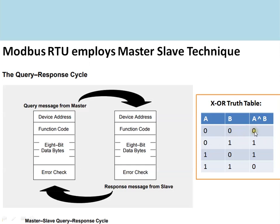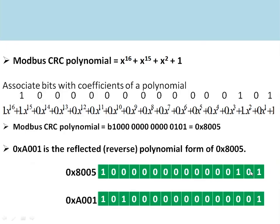In the XOR truth table: 0 XOR 0 = 0, 0 XOR 1 = 1, 1 XOR 0 = 1, 1 XOR 1 = 0. The Modbus CRC polynomial is x^16 + x^15 + x^2 + 1. The coefficients of this polynomial form the 16-bit value. The higher-order x^16 coefficient is omitted, and the remaining coefficients form the Modbus CRC polynomial.